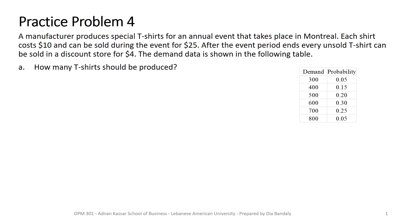This problem is also a single period model, but the difference from the previous problem is that here demand has a discrete probability distribution. We have a manufacturer that makes t-shirts specific for an event in Montreal. A shirt costs $10 and they are sold during the event for $25. After the event, all unsold t-shirts can be sold at a discount store for $4. This is our demand data with a discrete probability distribution.